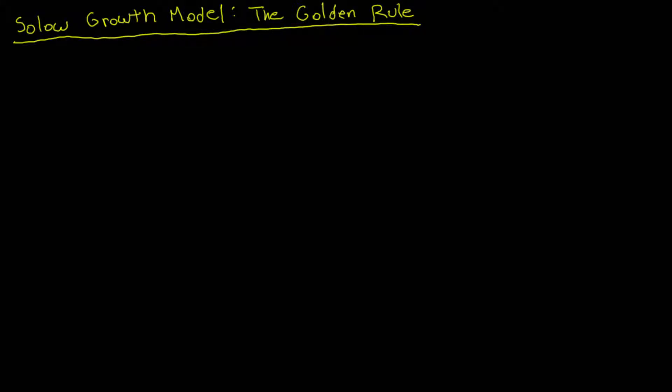Welcome to part four of this video series on the Solow growth model. I will be discussing the golden rule savings rate in this video. The golden rule savings rate is defined as the savings rate that maximizes consumption in a steady state. I will show you how to find the golden rule savings rate and explain the intuition behind the result.